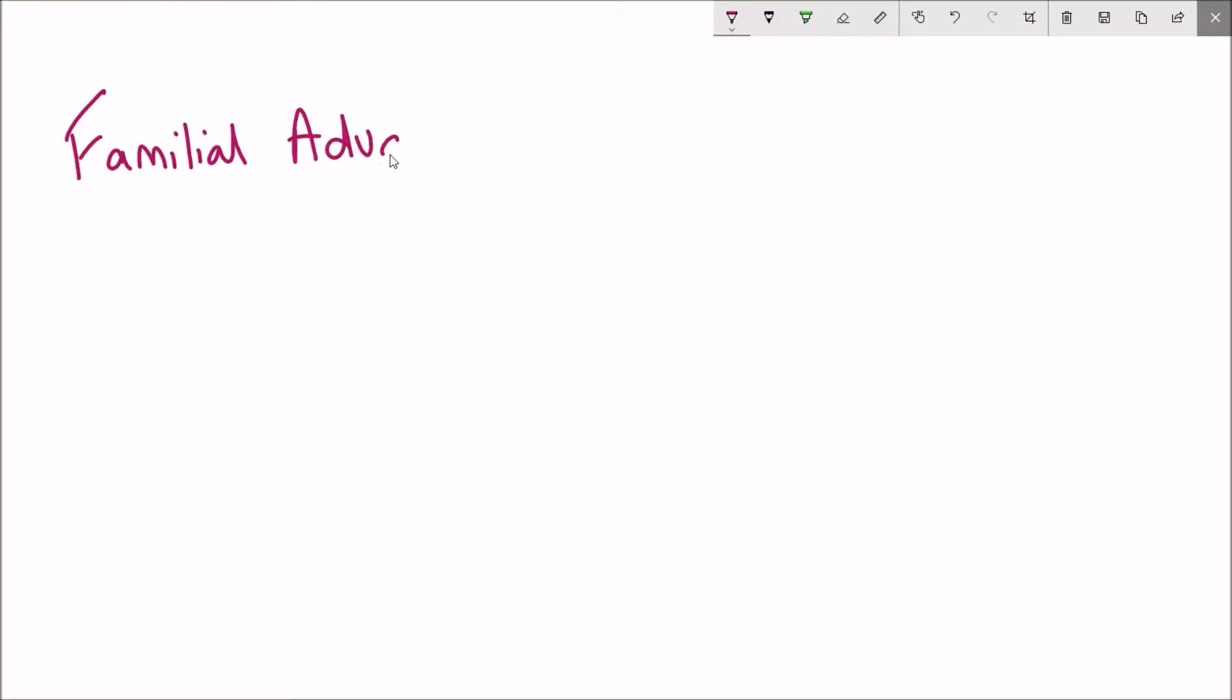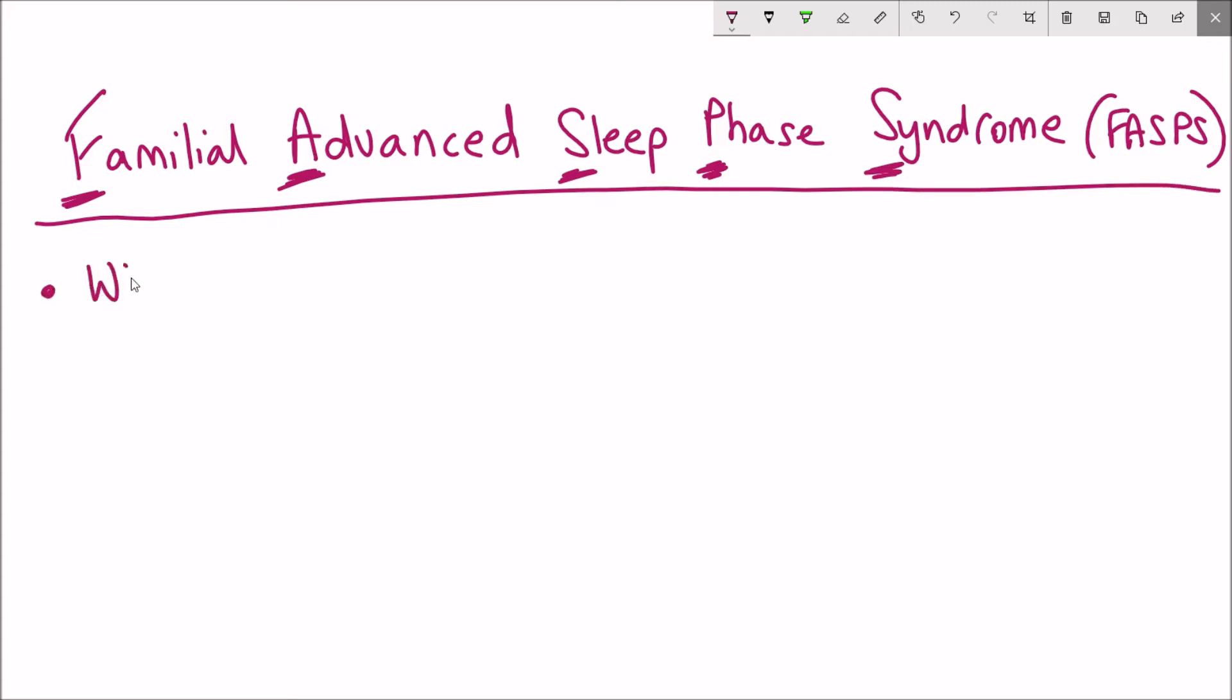The example we'll look at is the familial advanced sleep phase syndrome, otherwise referred to as FASPS. Anything that is familial is an event that runs within a family, and in this case this is because of a genetic mutation that can be inherited down the generations.